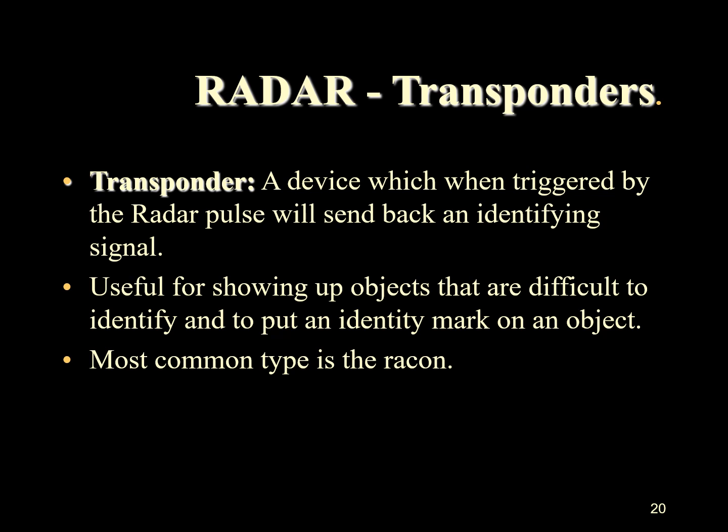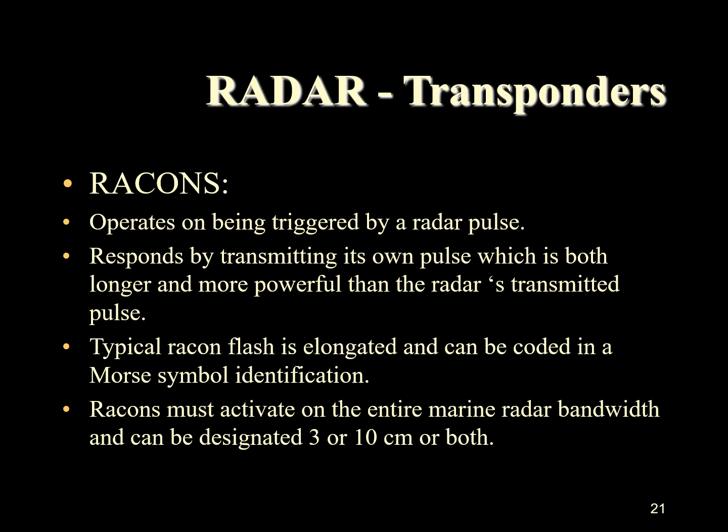Let's talk about radar reflectors and radar transponders. Poor radar responses, particularly from navigation marks and small craft, can be improved by adding a radar reflector or by attaching a transponder device which will provide an identification signal. The word transponder refers to a wide variety of devices which are triggered by the radar pulse and then send back an identifying signal — they are particularly useful for showing up objects which may otherwise be difficult to identify. The most common type of transponder is the RACON, which operates by being triggered by a radar pulse and transmitting its own pulse that is both longer and more powerful than the radar's transmitted pulse.